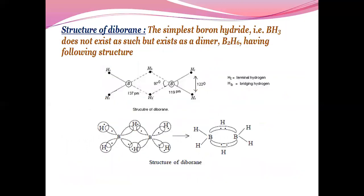The structure of diborane: the simplest boron hydride that is BH3 does not exist as such but exists as dimer B2H6, that is diborane, having the following structure.